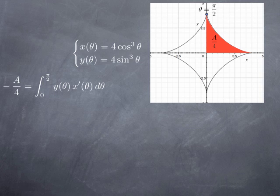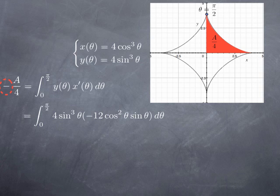We obtain the opposite simply because we describe the curve from right to left instead of left to right. Replacing y by its value and x' by its value: x'(θ) = 12 cos²θ multiplied by the derivative of cosine θ, which is −sinθ. So we replace y by 4 sin³θ and x' by −12 cos²θ sinθ. Pulling out the constant −12 × 4, we get −48 times the integral from 0 to π/2 of sin⁴θ · cos²θ dθ.